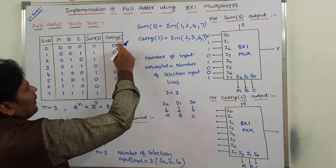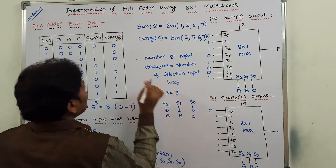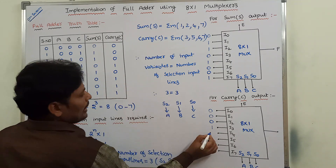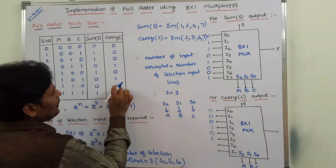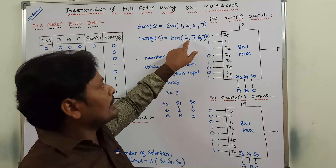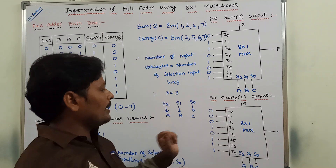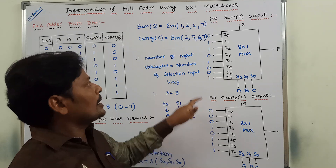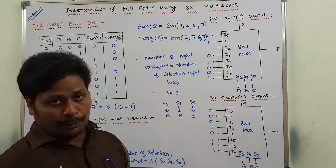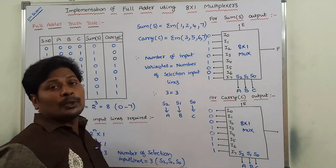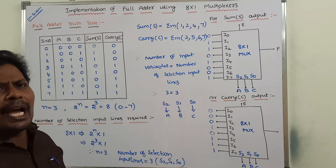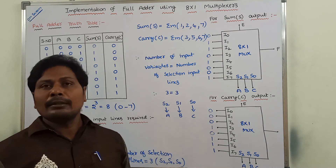In the same way, for the carry output, the values from the carry column are assigned to I0 through I7. For the min terms present in carry — min terms 3, 5, 6, 7 — I3 value is 1, I5 value is 1, I6 value is 1, and I7 value is 1. The remaining inputs are filled with 0s. This is the circuit diagram for the sum output variable in the full adder using 8 by 1 multiplexer, and this is the circuit diagram for the carry output variable.